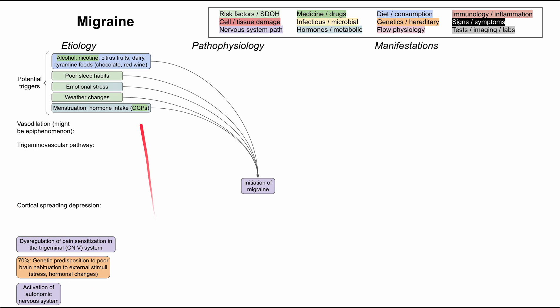Let's start with the triggers. Alcohol and nicotine are two drugs that have been associated with migraines. There are also a bunch of foods that have been labeled as triggers. These include citrus fruits, dairy products like yogurt, cheese, and milk. Foods that contain tyramine, like chocolate and red wine, have also been associated as migraine triggers.